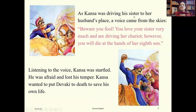As Kanz was driving his sister to her husband's place, a voice came from the skies and said: 'Beware, you fool! You love your sister very much and are driving her chariot. However, you will die at the hands of her eighth son.' The eighth son of Vasudeva and Devaki would kill Kanz — that was the voice from the sky.